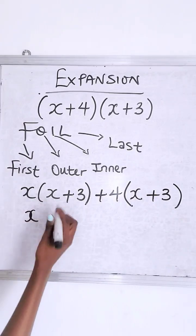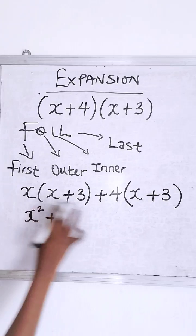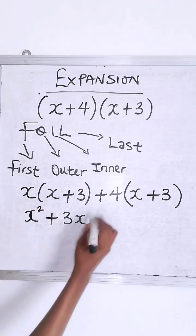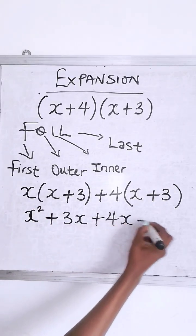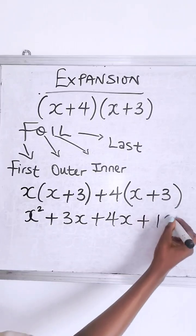So opening this, now you have x times x to give you x squared, x times 3, 3x, 4 times x, 4x, and then 4 times 3, 12.